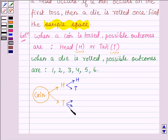So, the possible outcomes are 1, 2, 3, 4, 5 and 6. Therefore, this experiment consists of 8 sample points.